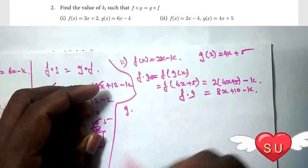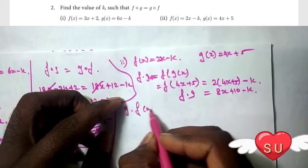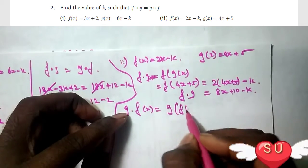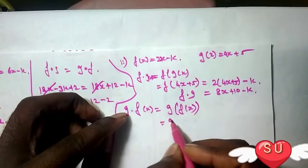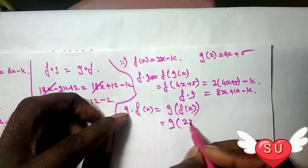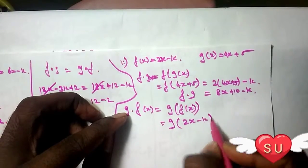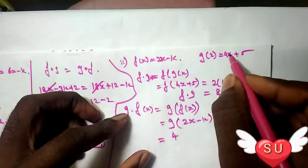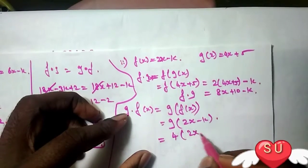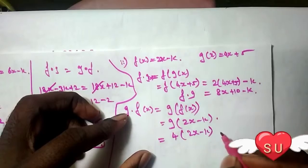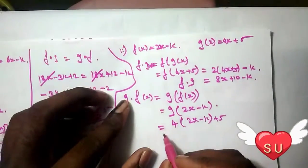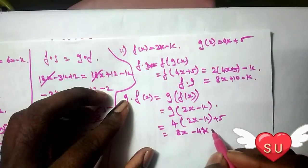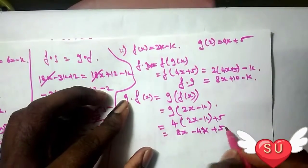Okay. Now, g∘f: g of f of x. f of x is 2x minus k. So, g of (2x minus k) equals 4 times (2x minus k) plus 5, which gives 8x minus 4k plus 5.